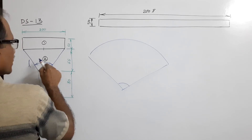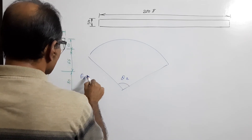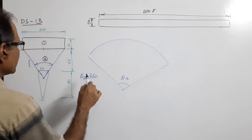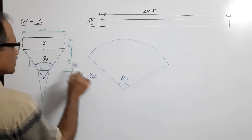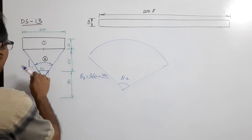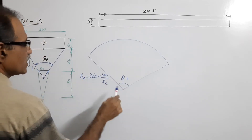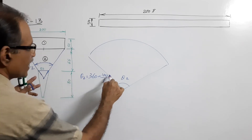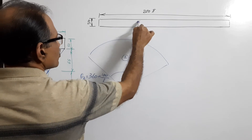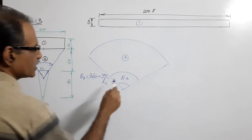θ₂ equals 360 multiplied by the base radius — which is 100 mm — divided by l₂. Take this arc distance and close it. That gives you the development of Part 2. I hope you understand: the sector angle is θ₂ and you don't need to draw individual generators.